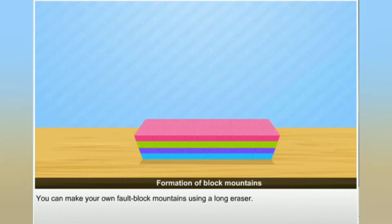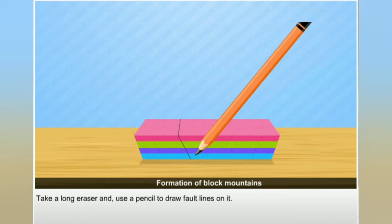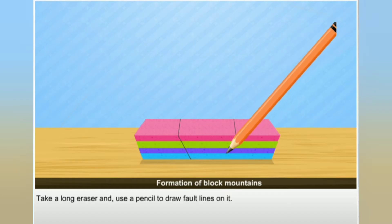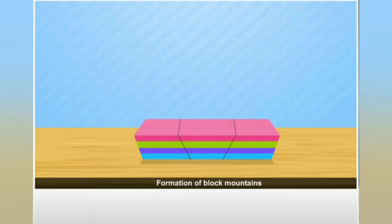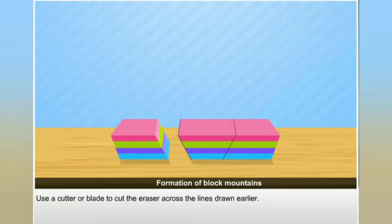You can make your own fault block mountains using a long eraser. Take a long eraser and use a pencil to draw fault lines on it. Then use a cutter or blade to cut the eraser across the lines drawn earlier.